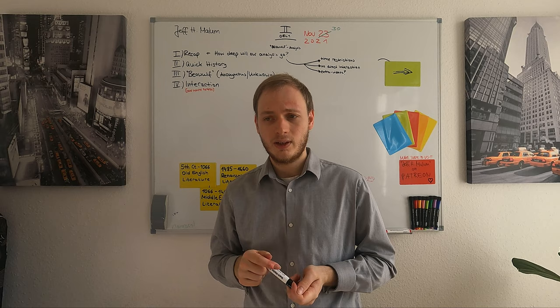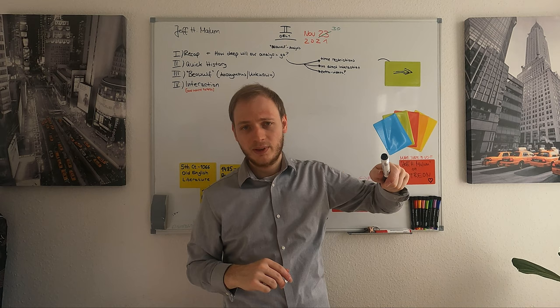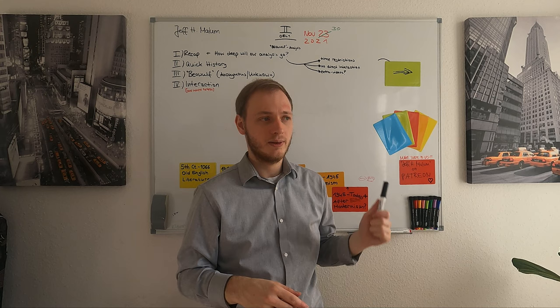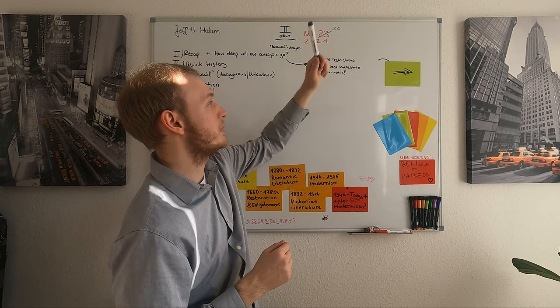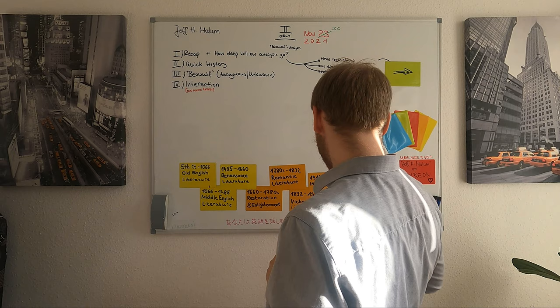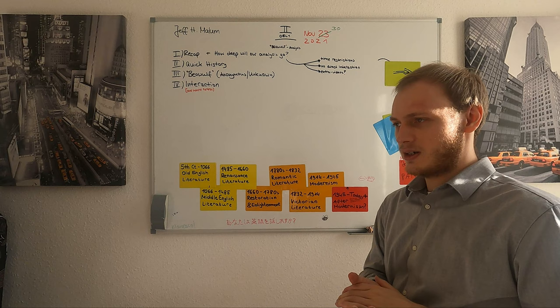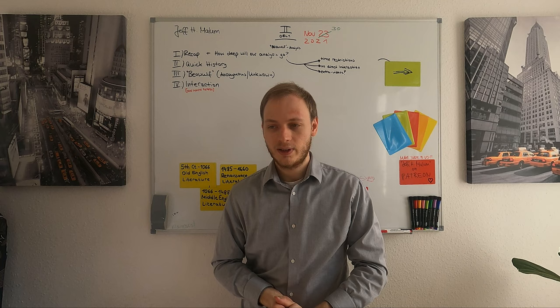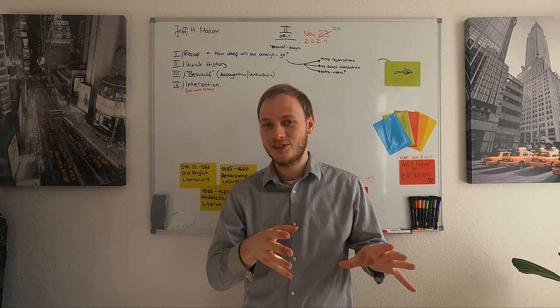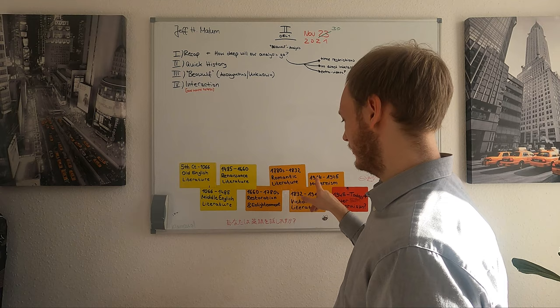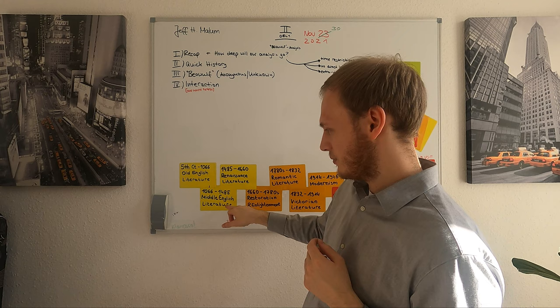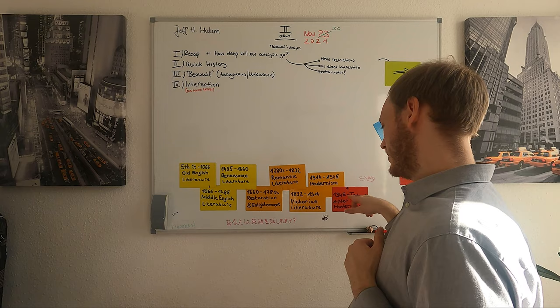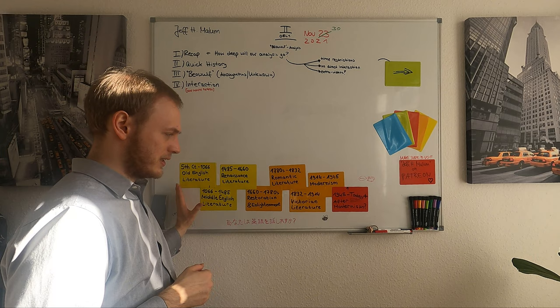Now let's start with a brief recap of the last session. By the way, I'm sorry for the delay - I was ill for a couple of days and couldn't record this lecture, so I delayed it by one week; it's November 30th today. Last week we talked for the first time about British literary periods, and I gave you an overview of the chapters we will be dealing with in the lecture. We will have one or up to four, but mostly two lectures about each literary period. We talked about Old English, Middle English, Renaissance, Restoration, Enlightenment, Romantic, Victorian, Modernist, and what comes after that.